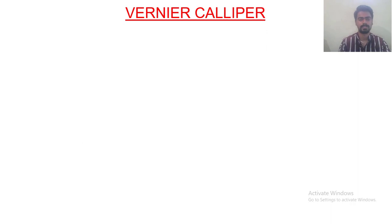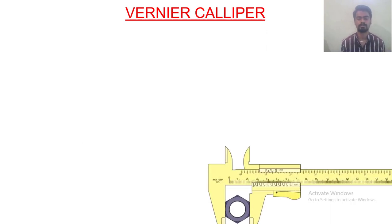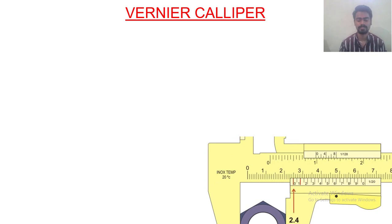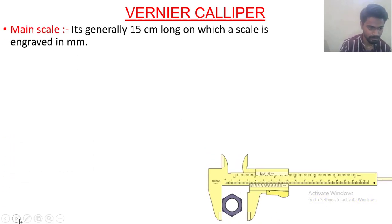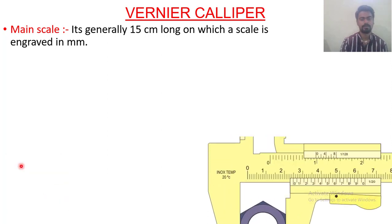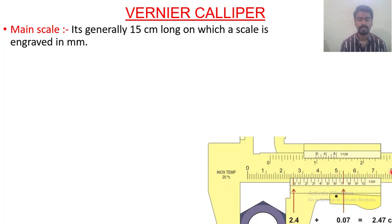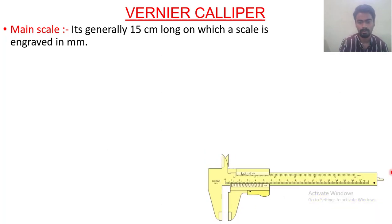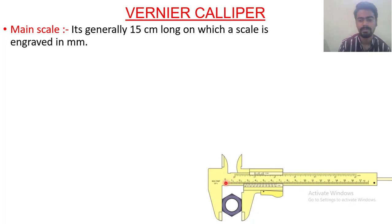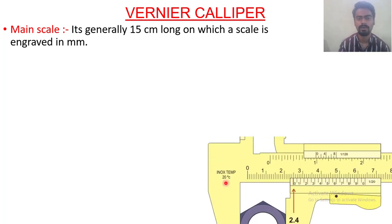Let's start with the Vernier Caliper and its construction — basically how does it look. Here in front of you is an image showing the Vernier Caliper. We'll discuss the parts one by one, starting with the first one: the main scale. This is your main scale, starting from 0 up to 17 in our case — generally it has a 15 centimeter long scale. The subdivision is 1 millimeter, so from 0 to 1 centimeter there are 10 divisions, each of 1 millimeter.